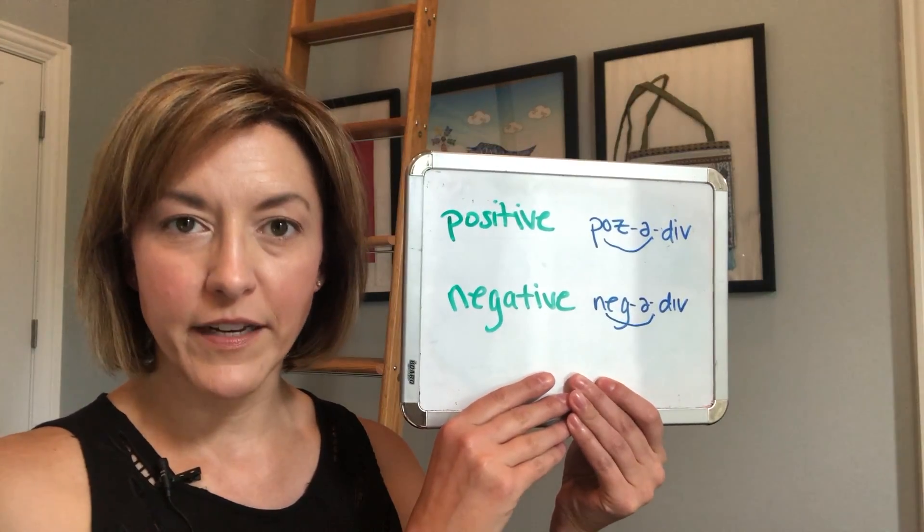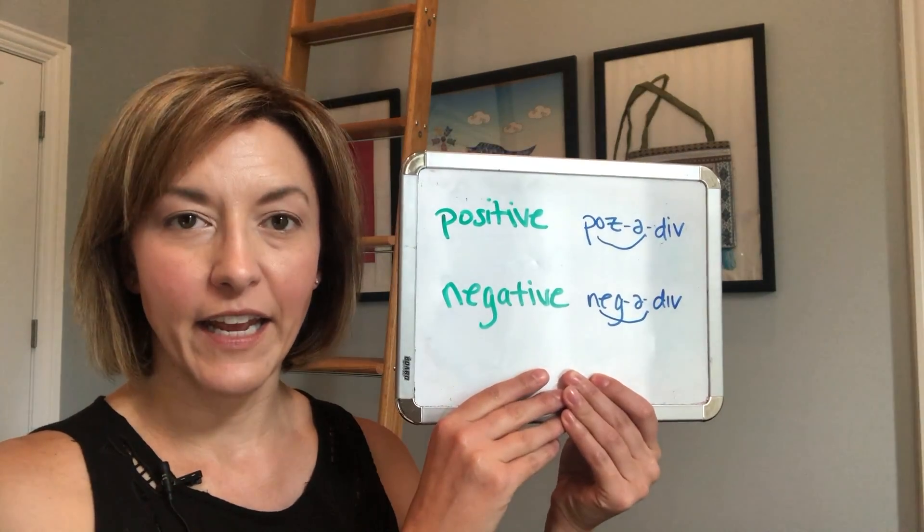Hi, I'm Jennifer from Tarle Speech with your pronunciation question. Today we have two words: 'positive,' meaning the presence of something, and 'negative,' meaning the absence of something. These two words both feature the schwa syllable and the flap T, which in very simple terms is when we pronounce the letter T as a D sound.